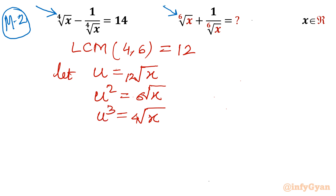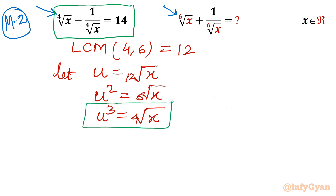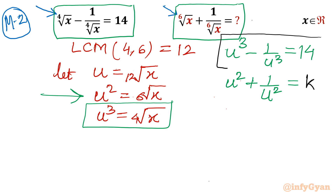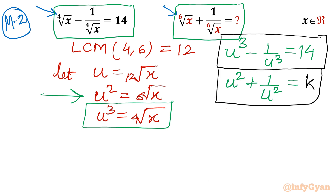I will frame two equations. Equation 1, using the 4th root which is u cubed: u cubed minus 1 over u cubed equals 14. Equation 2, for the 6th root which is u squared: u squared plus 1 over u squared equals k — the value we want to find. Equation 1 is cubic in u and equation 2 is quadratic in u.